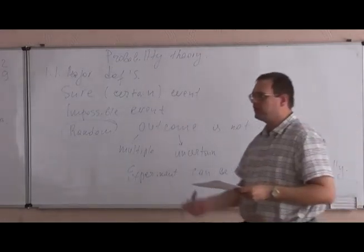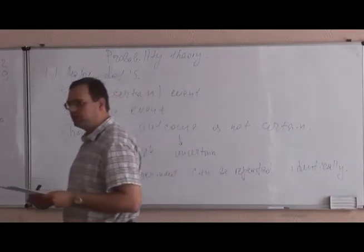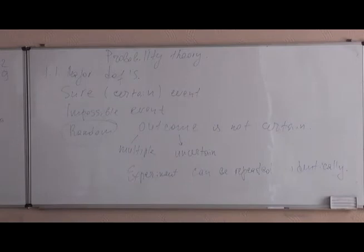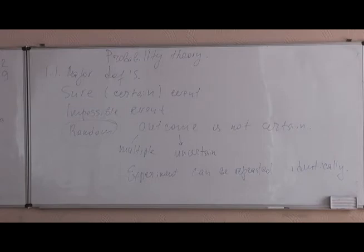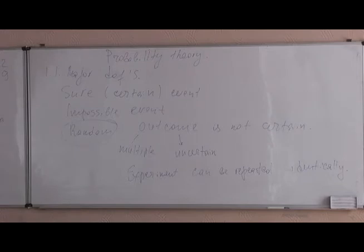Once we are tossing a coin, we can toss it as many times as we want. If we want to measure GDP, we can measure it as many times as we want, and every month — if we use the same technology and same methodology — we are going to have a different amount of GDP. We are not very much sure what amount of GDP is going to happen next month. So in this sense, GDP amount is also an uncertain event — it's a random variable.